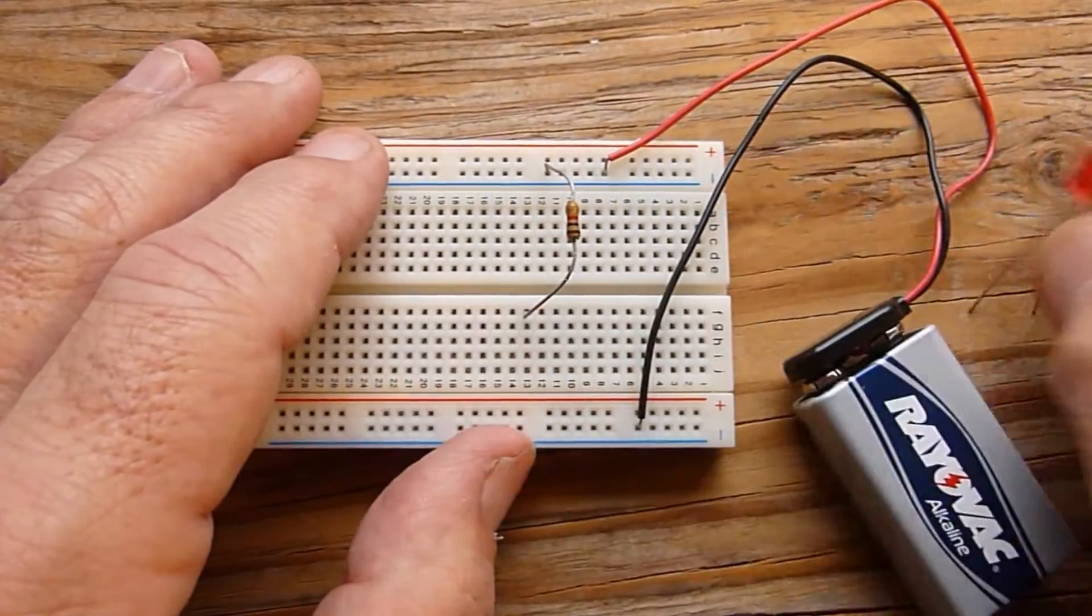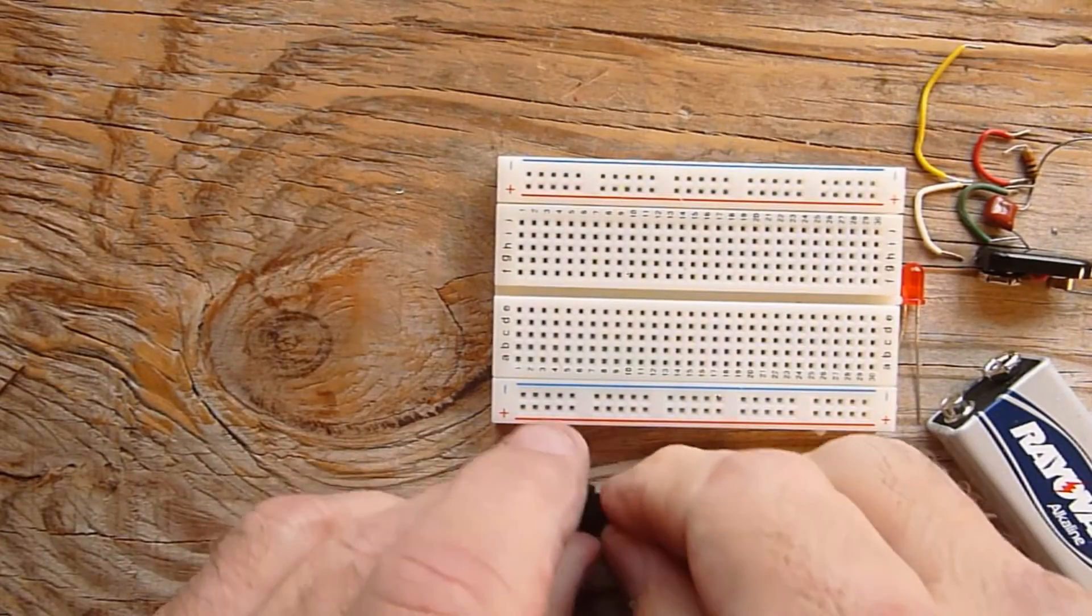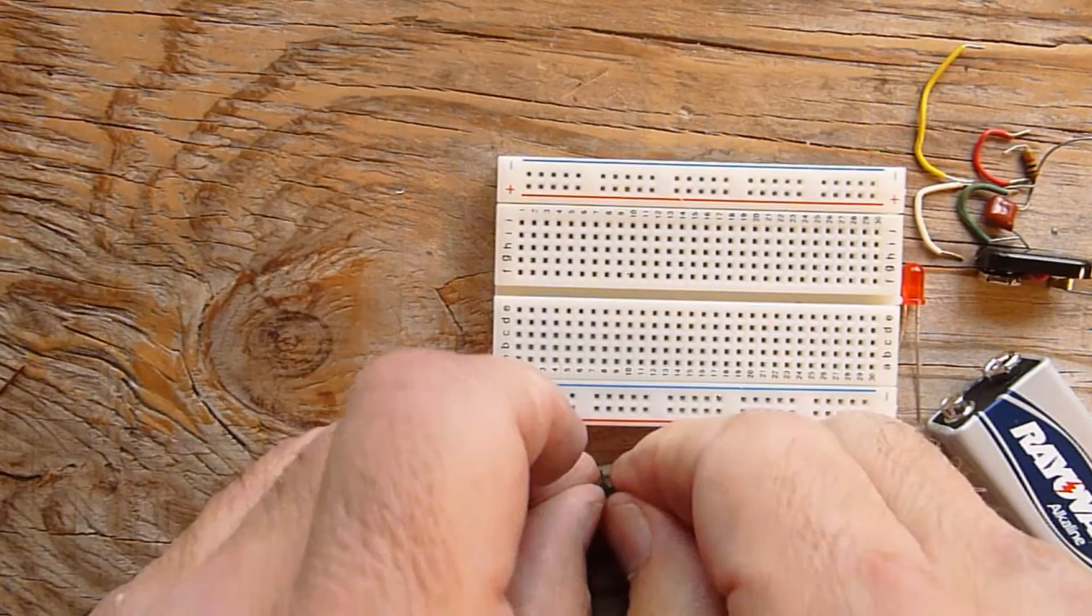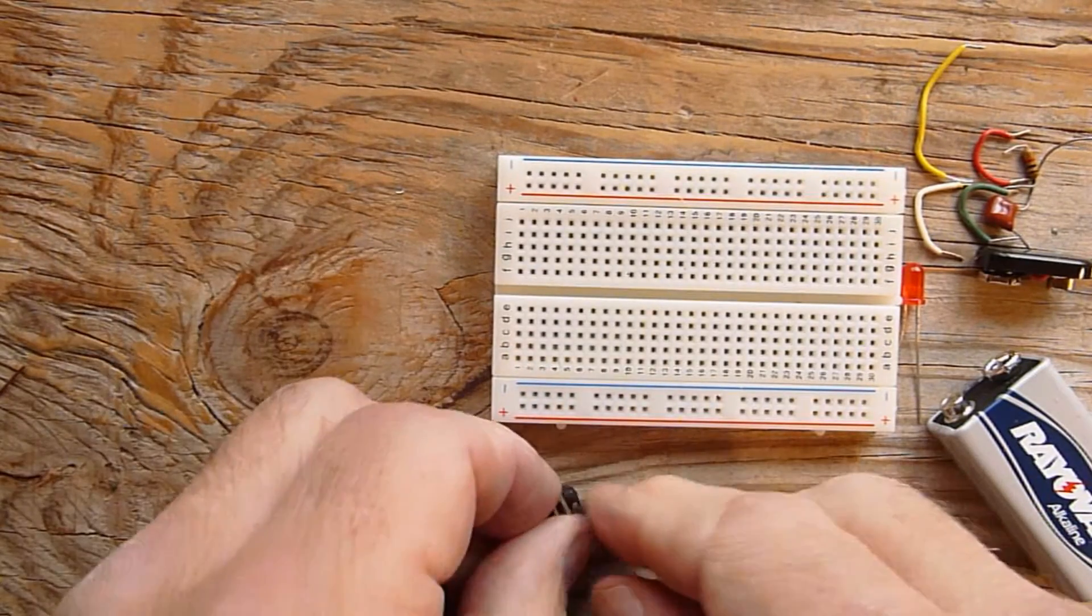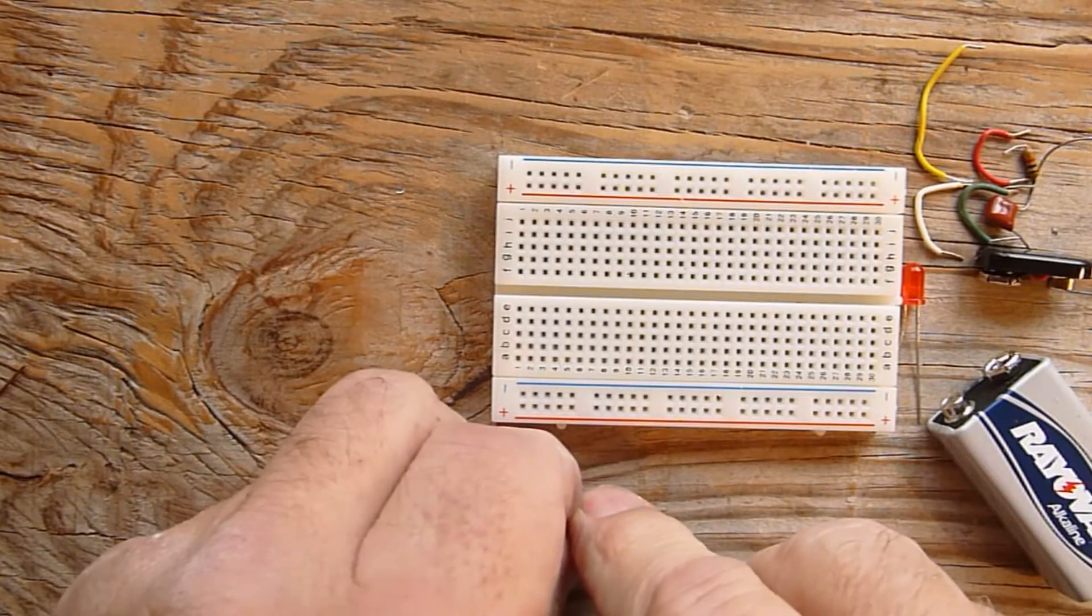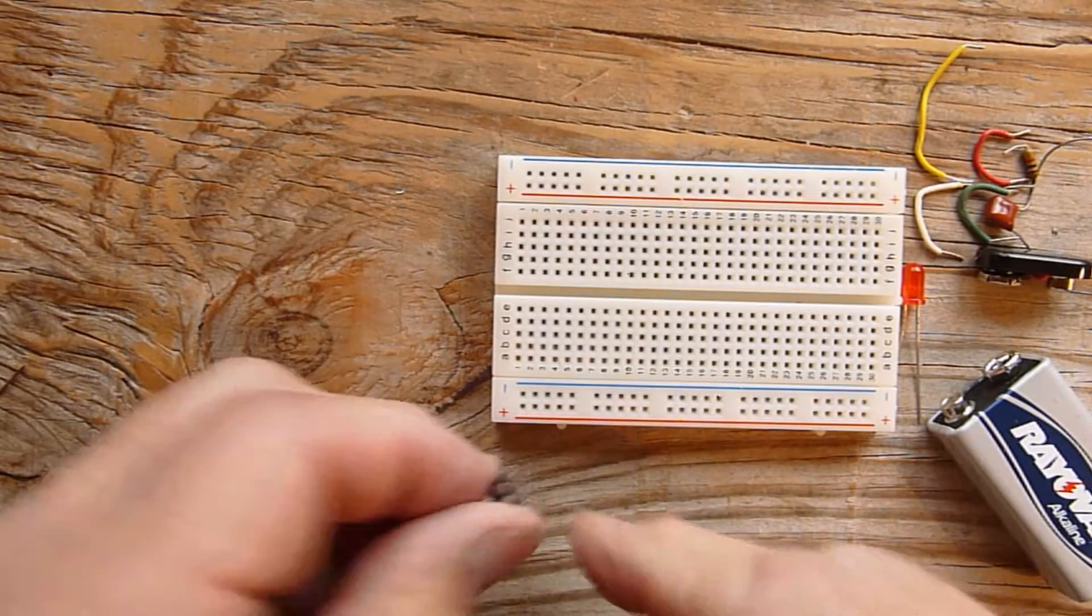We are now done with the circuit so we can pull the parts off and start another project right on the same board. DIP ICs work perfectly with the solderless breadboard. However, they sometimes come with the pins bent out a little bit so we have to straighten them up before they can be used here.